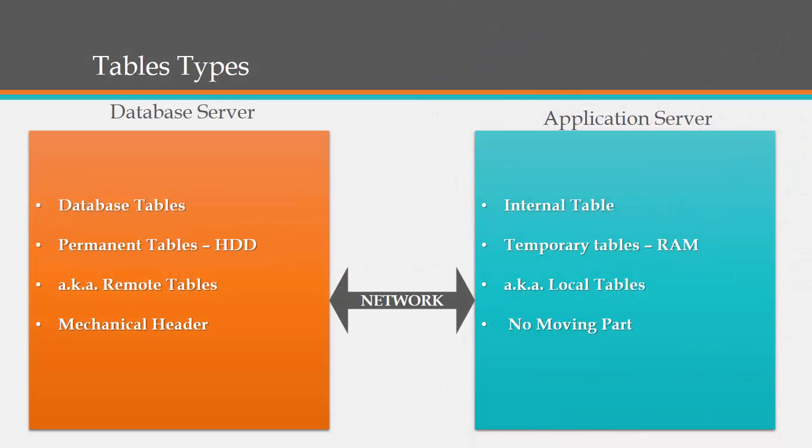At ground level, there are two types of tables: one is a database table and another one is an internal table. Database tables are permanent tables — they are stored on the hard disk of the database server, and unless the data is deleted it will remain on the hard disk. At the same time, ABAP programs are loaded and executed by the application server. The database server maintains business data whereas the application server holds the business logic in the form of programs.